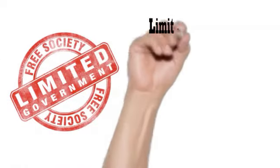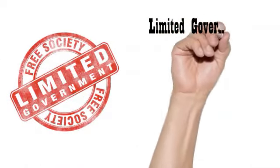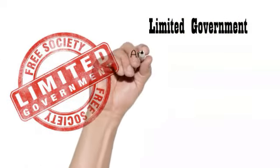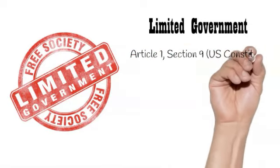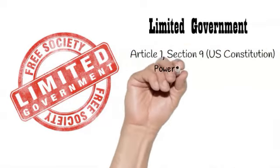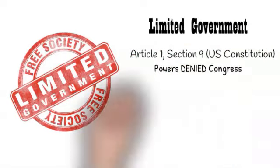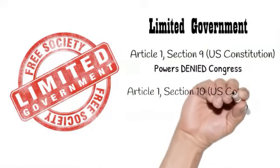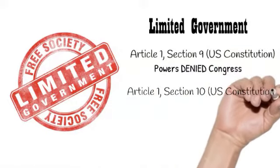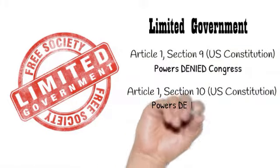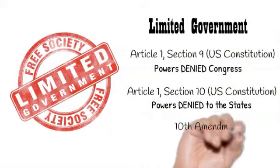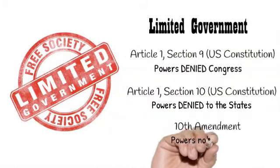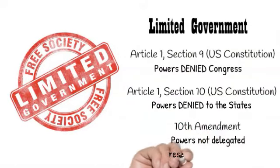Limited government is the idea that everyone — citizens and leaders alike — must obey the law. Article 1, Section 9 of the Constitution lists the powers that are denied to Congress. And Article 1, Section 10 lists powers that the states cannot use.